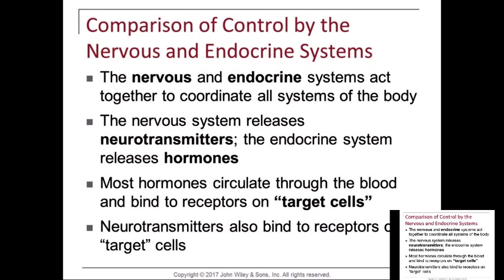They work together just in different fashion — one has effects that may be longer lasting and the other shorter lasting. The neural system and endocrine system act together to coordinate all the systems of the body. The neural system releases neurotransmitters — we have a pre-synaptic neuron and a post-synaptic side.